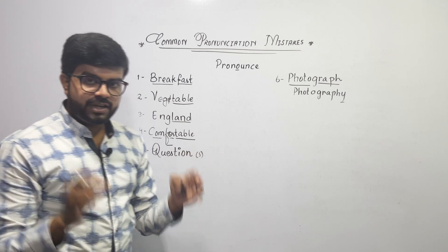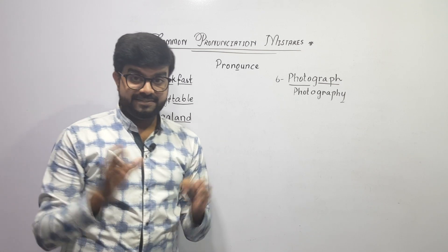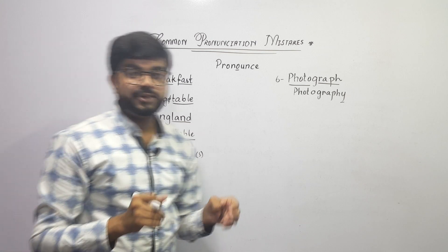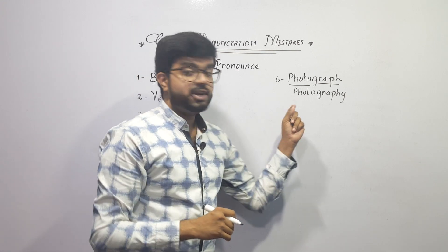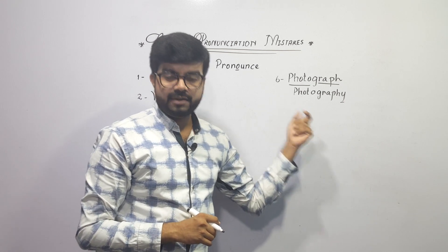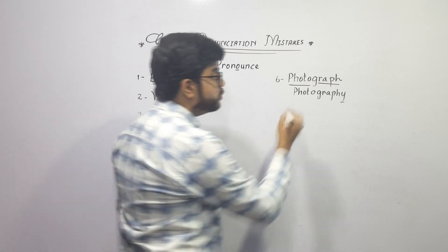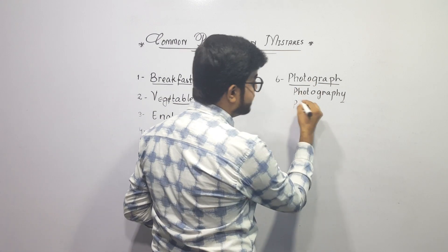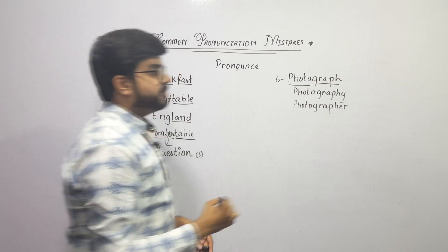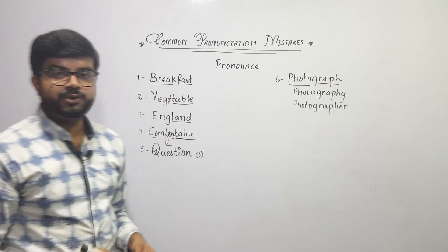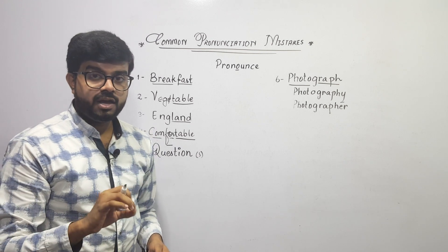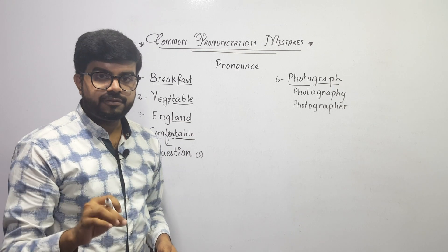Whenever a word feels confusing, divide it into multiple parts and pronounce them one at a time. Listen carefully: it is pho-tog-ra-phy — photography. And the person who is a professional of photography is a photographer — not 'photo-grapher', but photographer. Photographer.